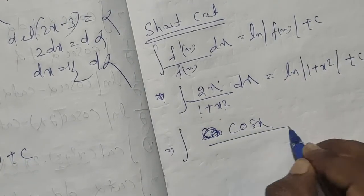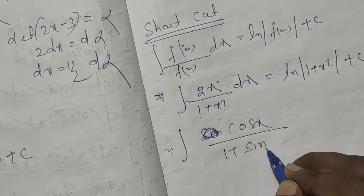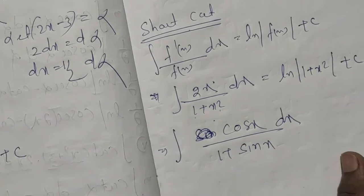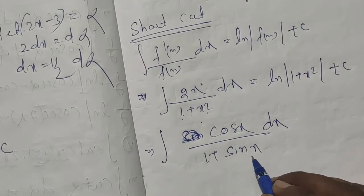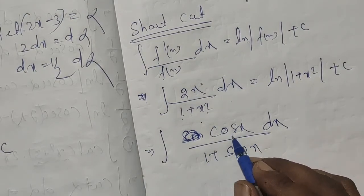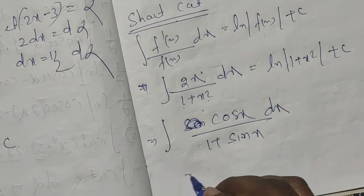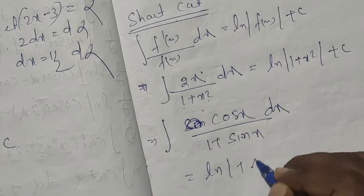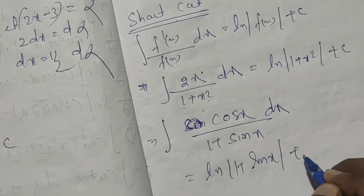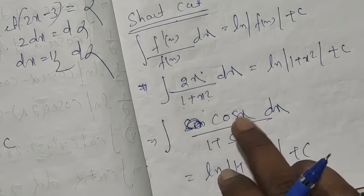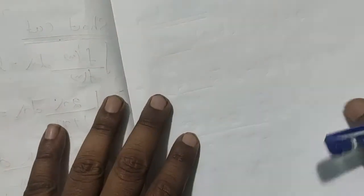Now consider the integral of cos x by 1 plus sin x dx. The denominator is 1 plus sin x. The derivative of 1 plus sin x is cos x. So the answer is ln of 1 plus sin x plus c.